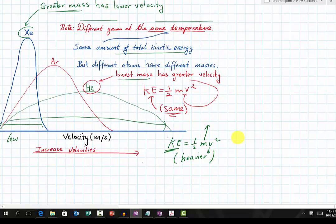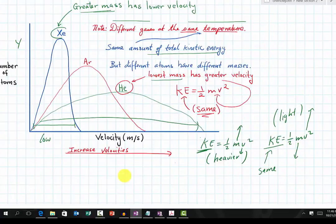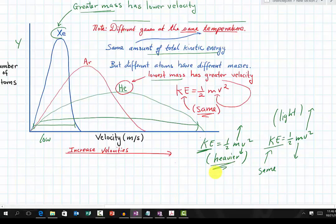For lighter molecules, we have KE = 1/2 mv². The mass is decreasing. Since the kinetic energy needs to stay the same, the velocity has to increase because there are only two variables. Let's use our common sense: if we have something that is heavy, it's going to travel slow. If we have something that is extremely light, it's going to travel fast.